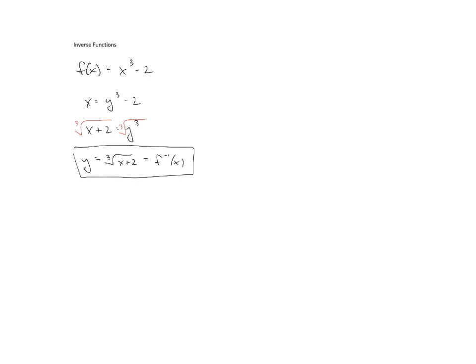Now, the second part says to graph both the function and the inverse on the same xy plane. So what I'll do, and you'll notice that both of those are just parent functions with transformations. Function f is your cube function shifted down two units. So maybe something like this, that is at -2. And then the inverse is going to be the cube root function shifted two units to the left. So maybe something like that. That's also -2. And that's the inverse.